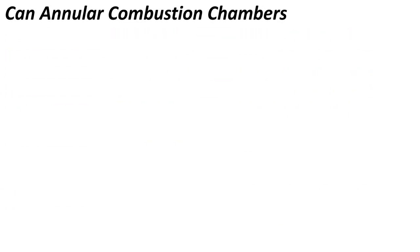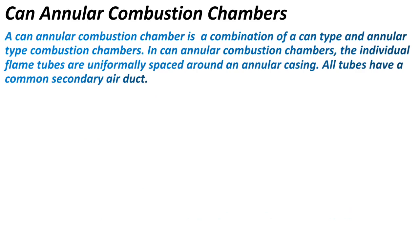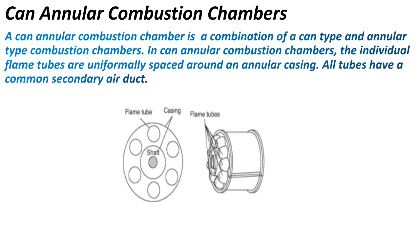The can-annular combustion chamber is a combination of the can type and annular type combustion chamber. In a can-annular combustion chamber, the individual flame tubes are uniformly spaced around an annular casing, and all tubes share a common secondary air duct. Here you can see a picture of a can-annular type combustion chamber where the secondary air ducts of all the cans are common. This type of combustion chamber is used in larger engines and gains the benefits of both annular and can type designs.